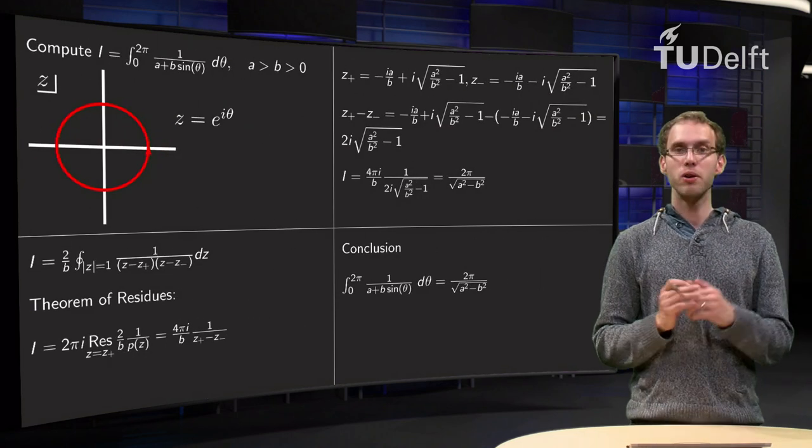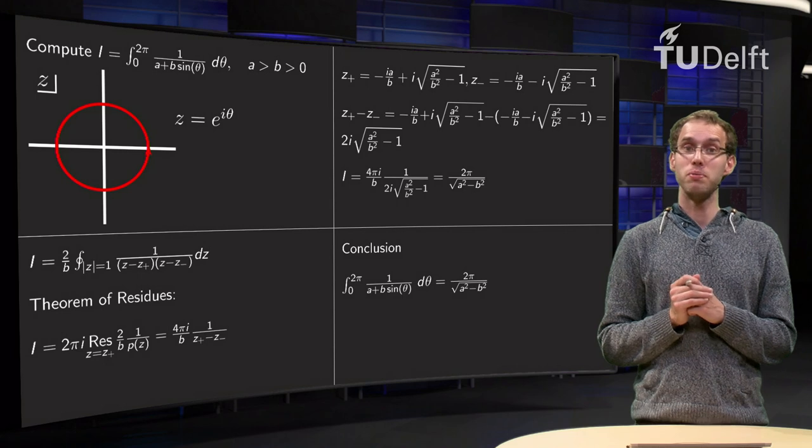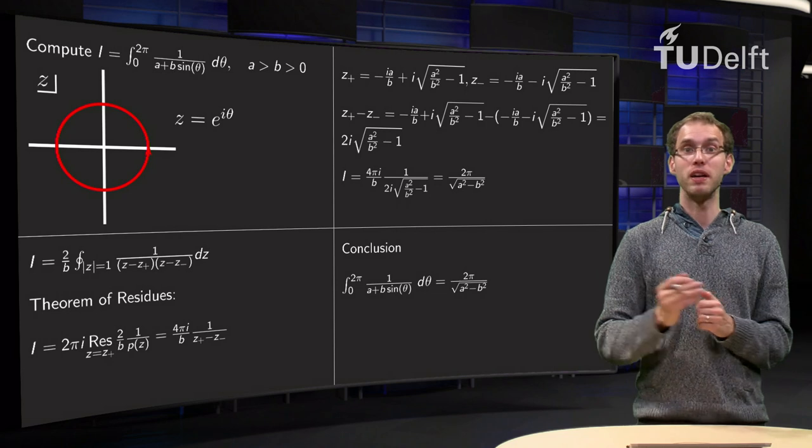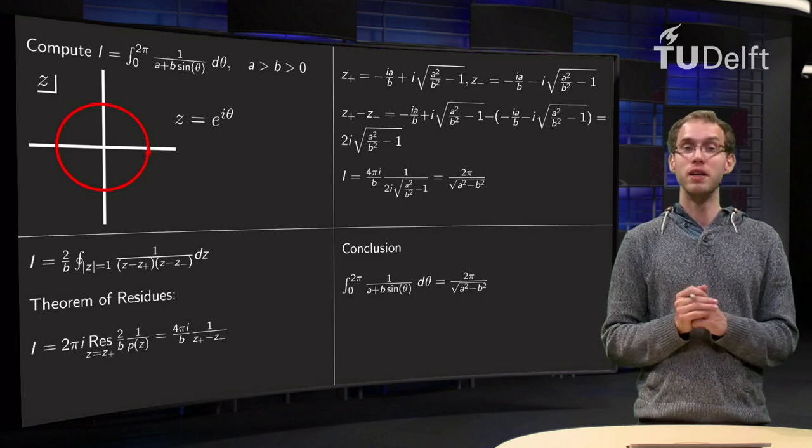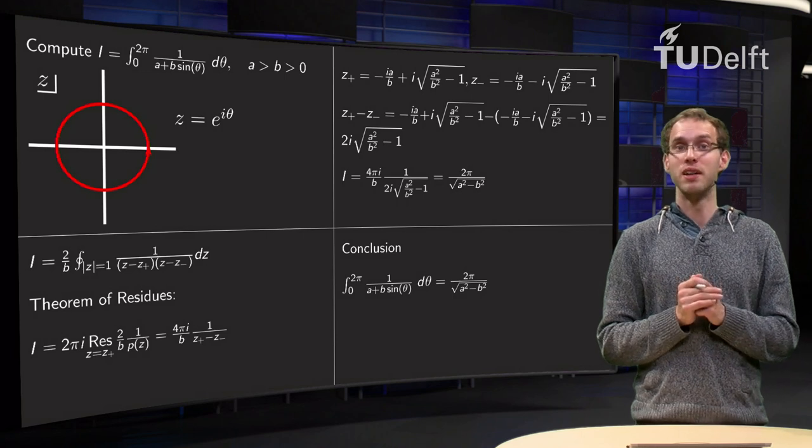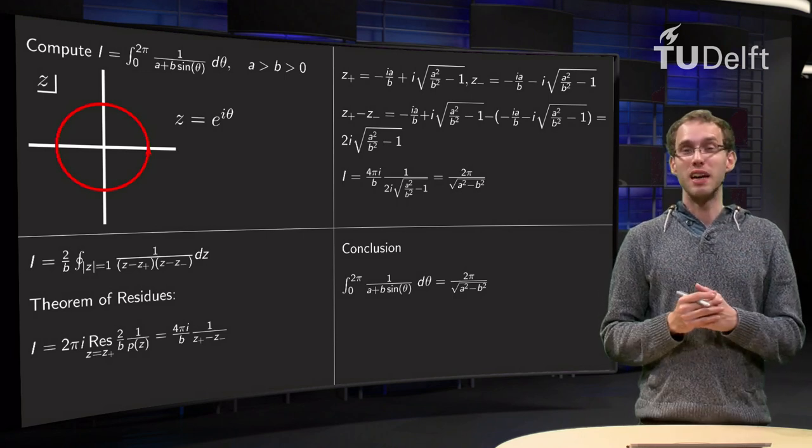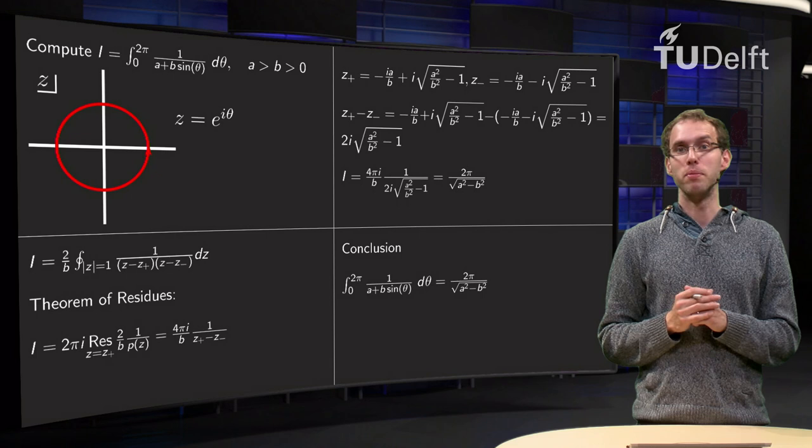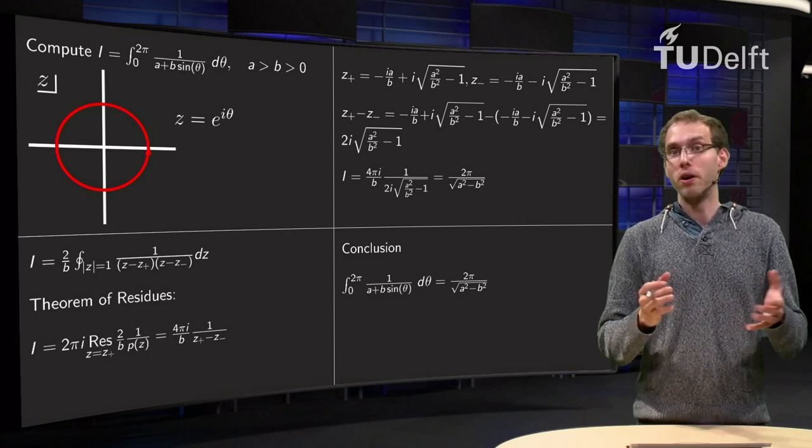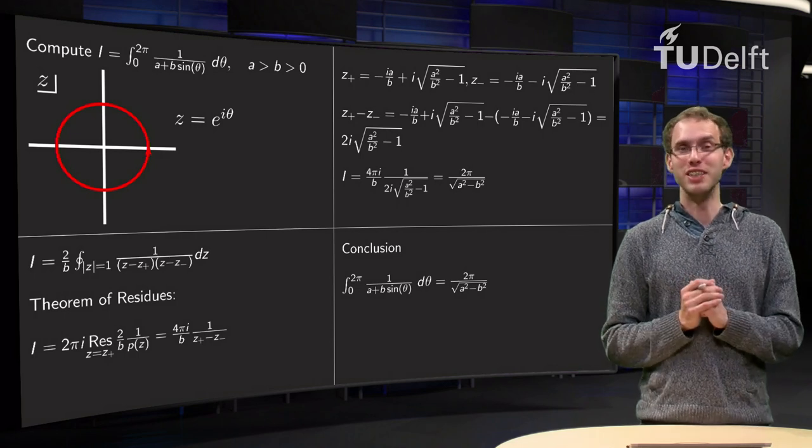So, there we have our integral, 2 pi over square root of a squared minus b squared, and notice by the way that this is a positive number because a was bigger than b, and this is how it should be because we have a positive function which we were integrating. So, this was a rather hard example due to the parameters a and b, so if you have some explicit numbers, using this technique will be relatively quite a lot easier.